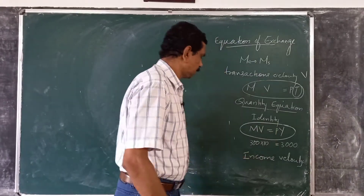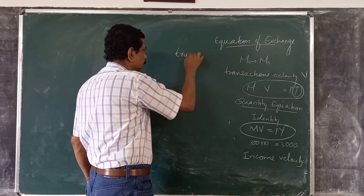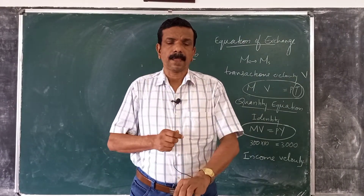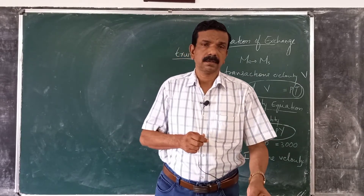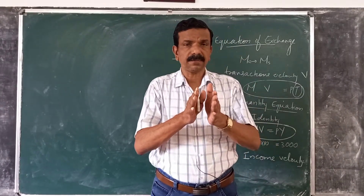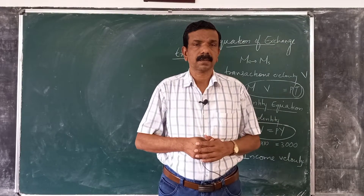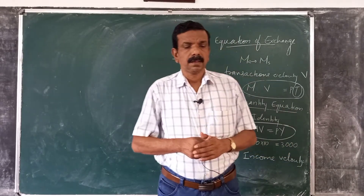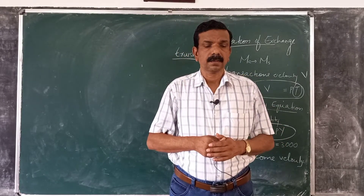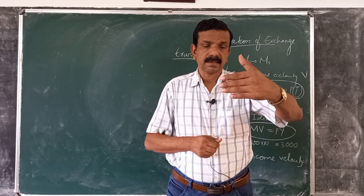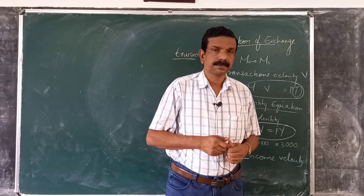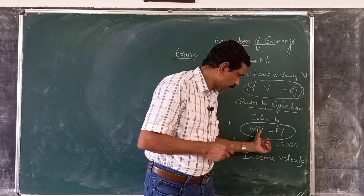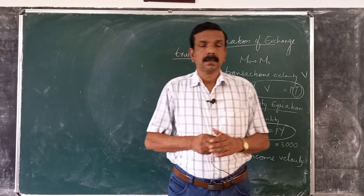The equation of exchange is a truism — it does not by itself explain the values of any of the variables contained in it. Fischer and other quantity theorists postulated that the equilibrium values of the elements of the equation are determined by factors other than the price level.